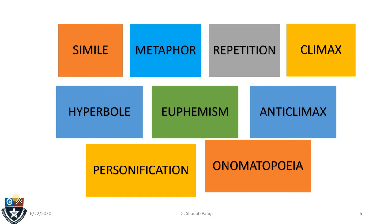So these examples come from some of these types: simile, metaphor, repetition, climax, hyperbole, euphemism, anticlimax, personification, and onomatopoeia. These are some that we are going to learn today — their use and how we could make use of them in our life for communication.